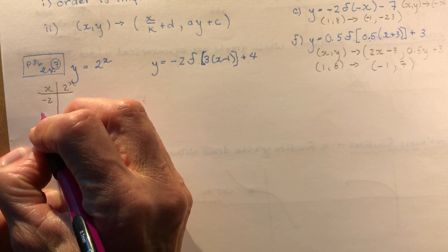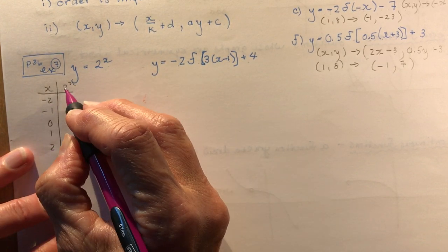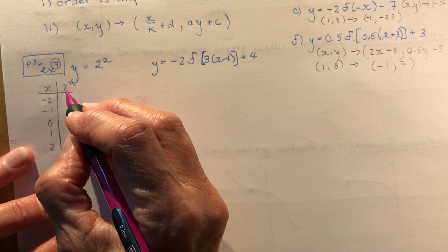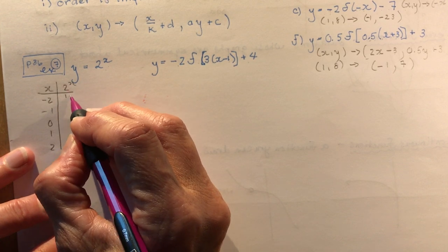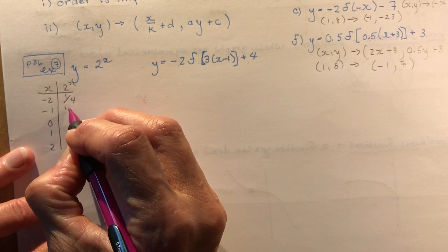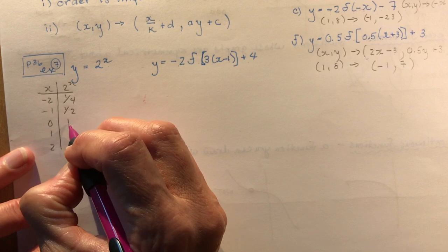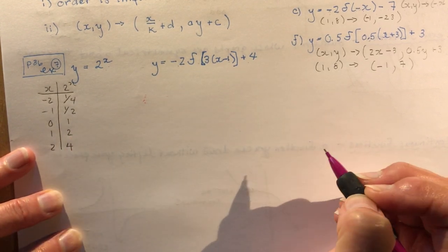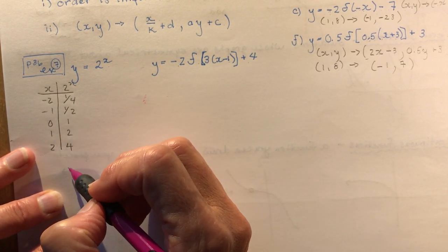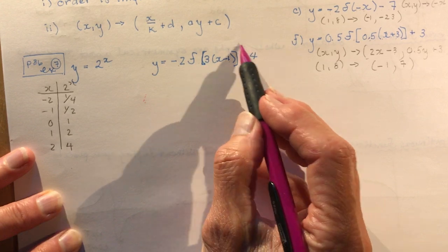2 to the x. So we go from minus 2 to positive 2. So 2 to the minus 2 is 2 squared, 1 over it, that's a quarter. 2 to the minus 1 is a half. 2 to the 0 is 1, 2, 4. Okay, so now we have 5 points that we can transform using this.